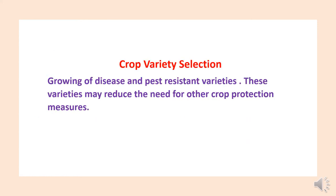Crop variety selection is also one of the important points in integrated pest management. We have to select varieties which have disease and pest resistance characteristics. These varieties may reduce the need for other crop production measures and will break the chain of pest development.